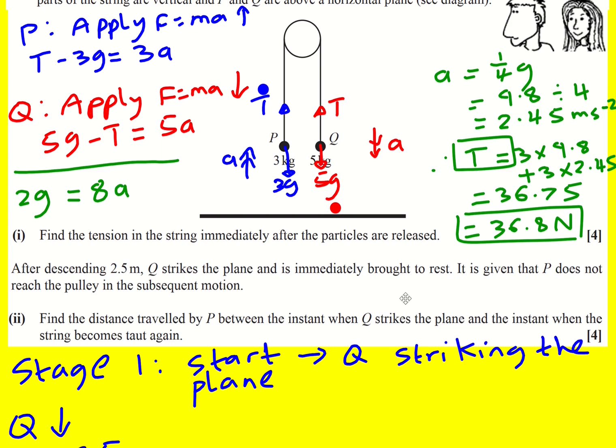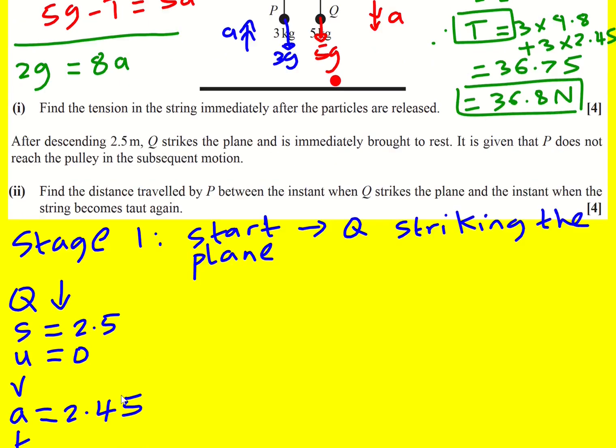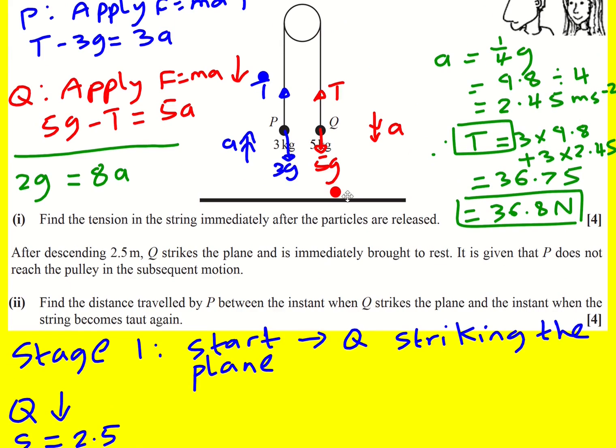So we want to work out the distance traveled by P between the instant when Q strikes the plane and when the string becomes taut again. Basically how far has it traveled to go from here to here? Well for that I'm going to need to know, actually not the time that it took for Q to get to the floor, I'm not interested in that, but I'm going to need to know the speed that P is going when the string loses its tautness.